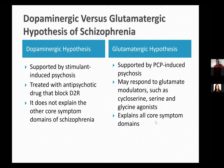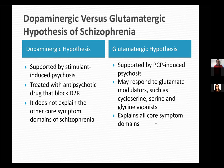Negative symptoms — avolition, anhedonia, asociality, alogia — are not explained by the dopaminergic hypothesis. The glutamatergic hypothesis, by contrast, is supported by phencyclidine-induced psychosis. Glutamate modulators such as cycloserine and glycine can improve psychosis because they modulate glutamate. Phencyclidine can induce not only psychosis but also negative symptoms and cognitive symptoms, which is why there has been a shift from the dopaminergic to the glutamatergic hypothesis in recent years.